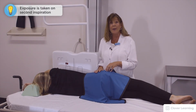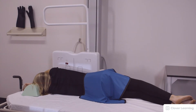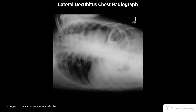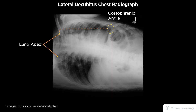The patient will hold very still. We will have her take in a big deep breath, blow it all the way out, take in another big deep breath, and the exposure is made. A diagnostic lateral decubitus chest radiograph should be free of motion and rotation and demonstrate the entirety of the affected side, to include the lung apex to the costophrenic angle.